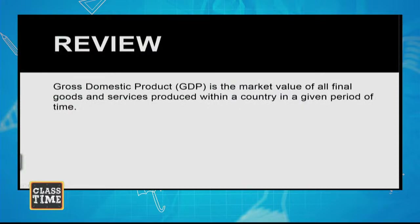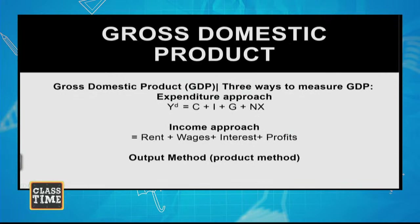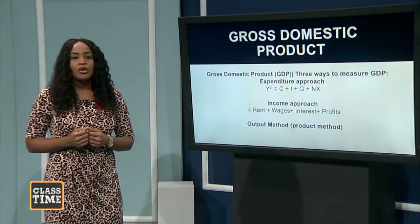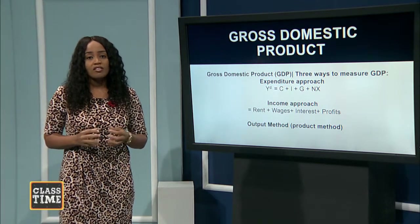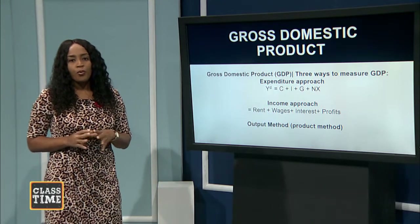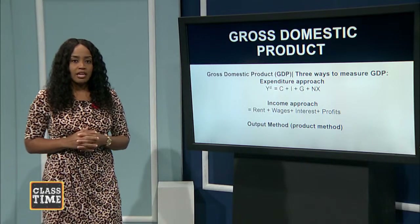I also introduced you to GDP, or Gross Domestic Product, which looks at the market value of all final goods and services within an economy. You were introduced to one way of calculating GDP: the expenditure approach, with components of consumption, investment, government spending, and net exports. The other ways of deriving GDP include the income method — payments to factors of production such as wages, salaries, interest, and profits — and the output method, which is a summation of the value of final goods produced for the market.